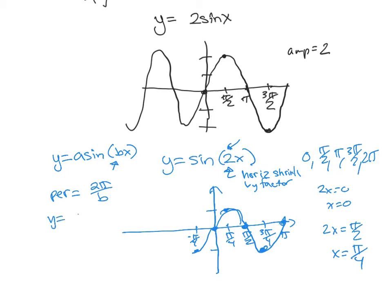So multiplying by the reciprocal of that fraction b. So for example, if I had y equals cosine of 1 half x, the period is going to be 2 pi over 1 half, or 2 pi times 2, or 4 pi. So it's going to be stretched horizontally. So this is really no different than when we did transformations in the first semester.